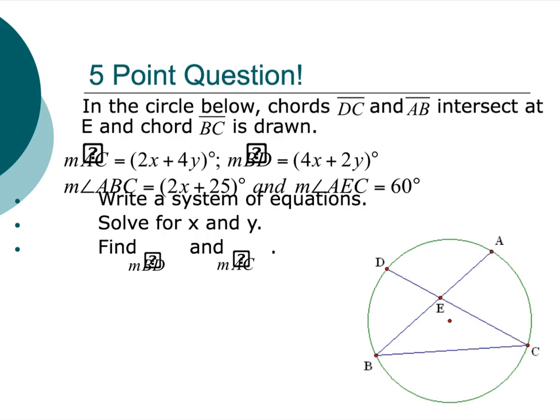Alright. I guess we call this the five-point question because it's crazy, and it's also crazily imported here, so let's see what we got. This should be an arc and an arc. Sorry, the formatting here just absolutely got awful. It's so terrible. Oh my goodness. Oh jeez. Alright. Anyways, let's see what we can do here. So I've got arc AC is 2x plus 4y. I've got arc BD is 4x plus 2y. And I've got angle AEC is 60. And I've got angle ABC is 2x plus 25. This is write a system of equations, solve for x and y, and find the two arc measures.